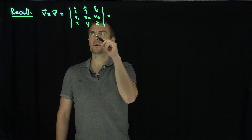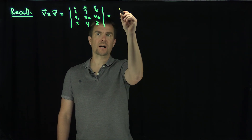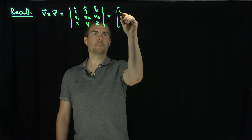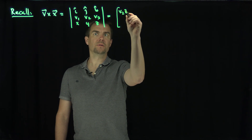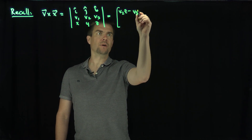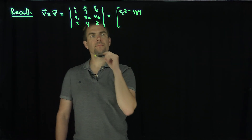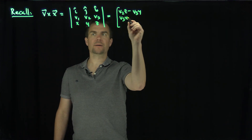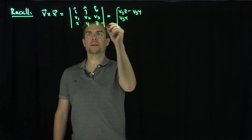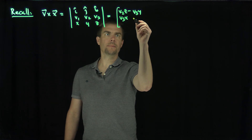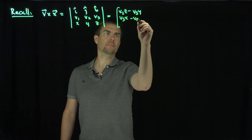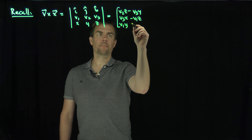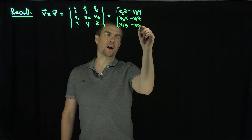And so this will give me a new vector. I'm going to write this as a column vector. The i component is going to be v2z minus v3y. Then the j component will give me v3x minus v1z. And finally the k will give me v1y minus v2x.